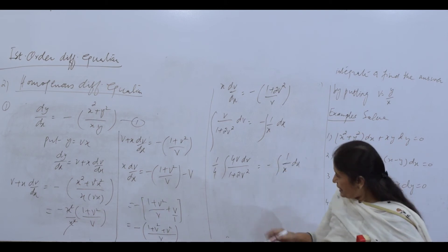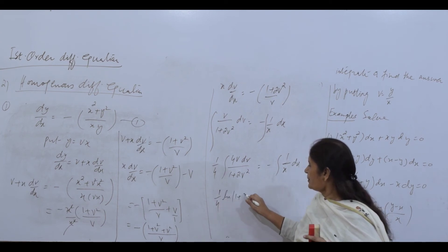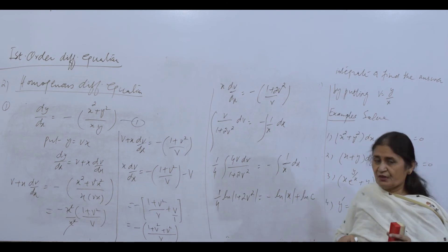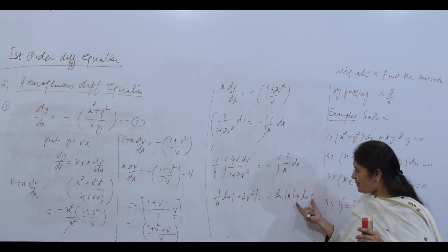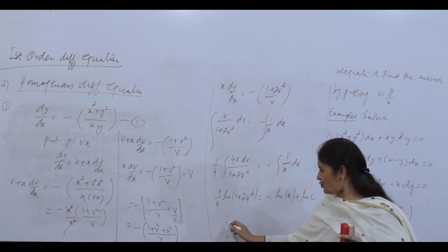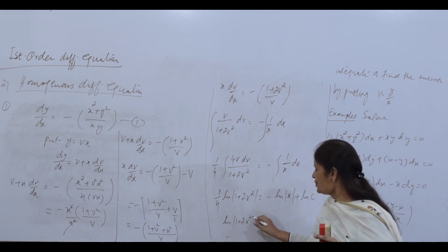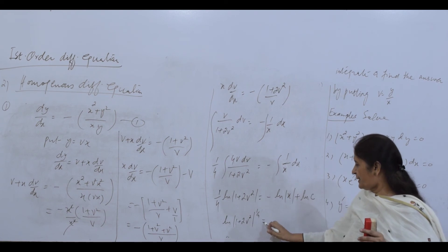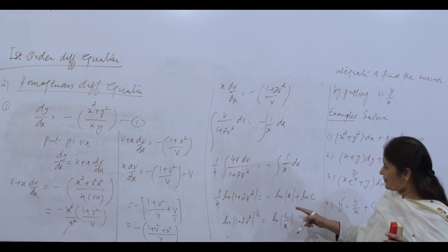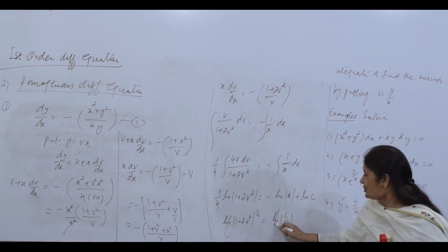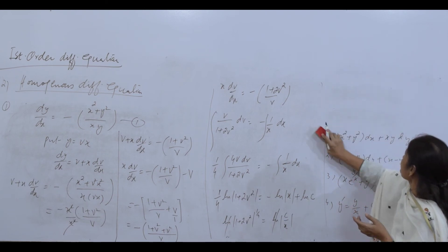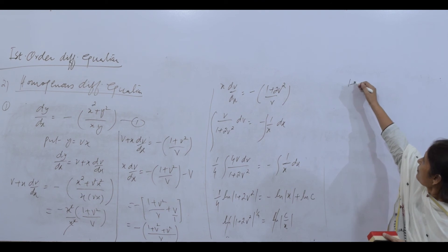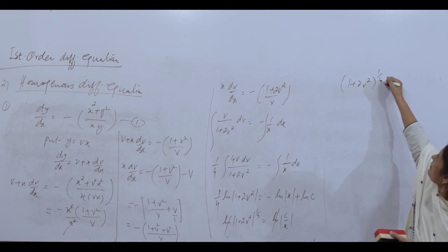Integrating both sides: (1/4)·ln|1 + 2v²| = −ln x + ln c. Using logarithm properties, this becomes ln(1 + 2v²)^(1/4) = ln(c/x). Since ln a^b = b·ln a, the logarithms cancel and we get (1 + 2v²)^(1/4) = c/x.